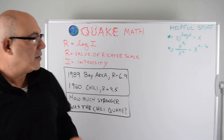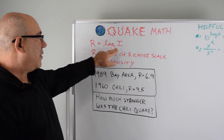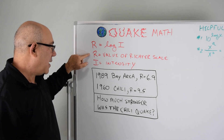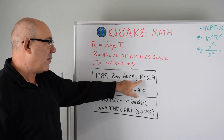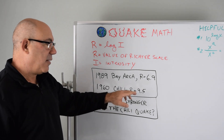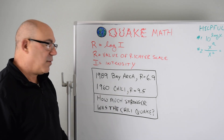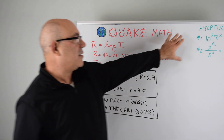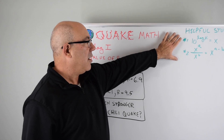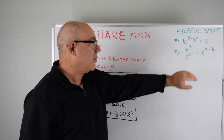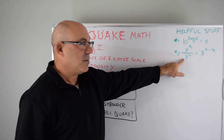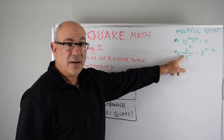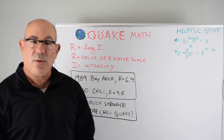So if we look at this, we have r equals the log of the intensity, where r is the Richter scale value and i is the intensity. For the Bay Area quake, rb equals 6.9, and for the Chile quake, rc equals 9.5. We're going to need two key relationships: 10 to the log(x) equals x, and x to the a divided by x to the b equals x to the a minus b. That's going to be important for us to solve this.